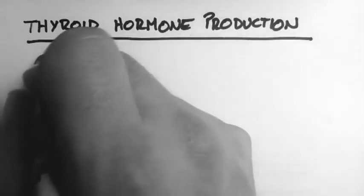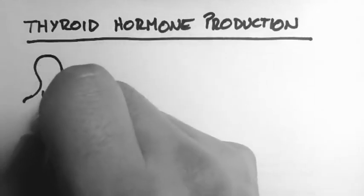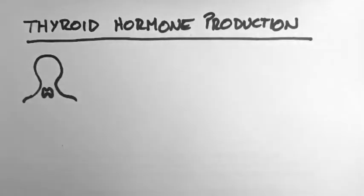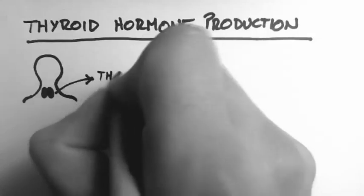The thyroid gland is located in the neck, in the lower part of the neck. So if this is someone's head, it's located down here, and it sits in front of the trachea.